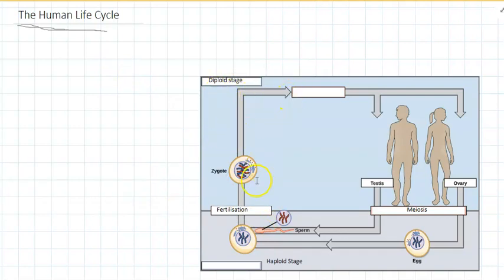So you can see that the human life cycle is alternating between the diploid stage and a haploid stage.